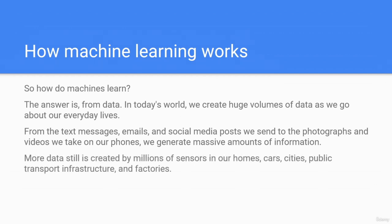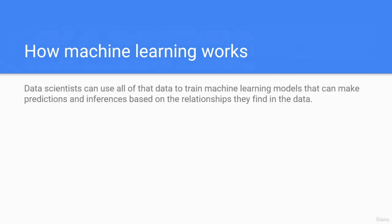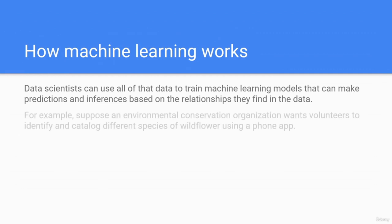More data is created by millions of sensors in our homes, cars, cities, public transport, infrastructure, and factories. Data scientists can use all of that data to train machine learning models that can make predictions and inferences based on the relationships they find in the data.